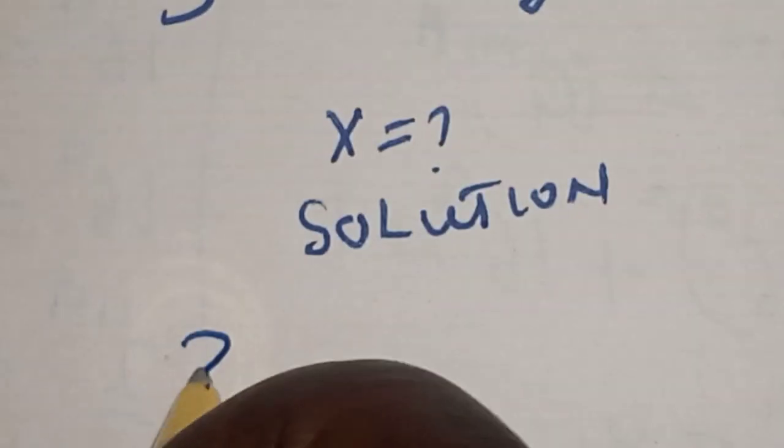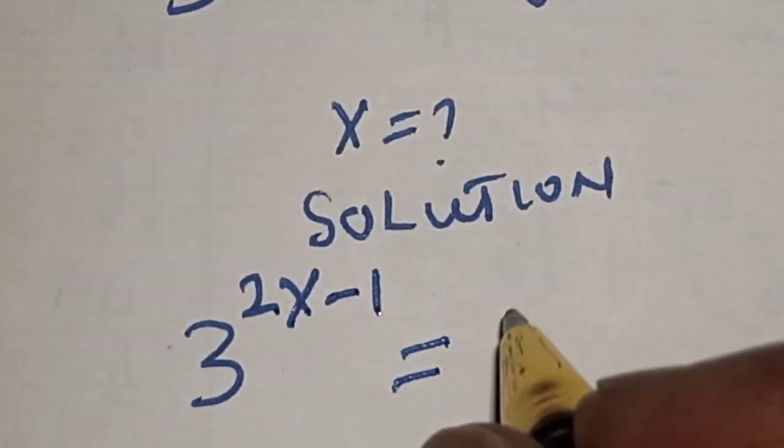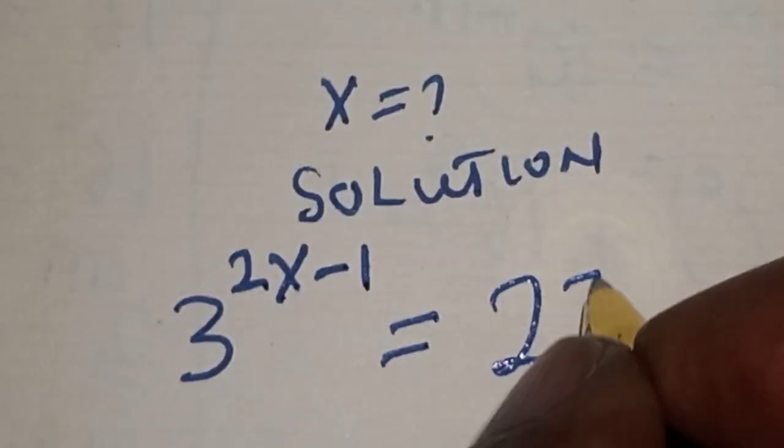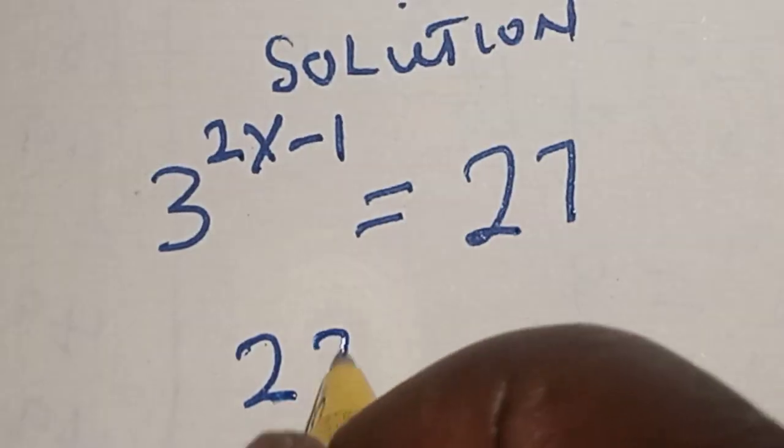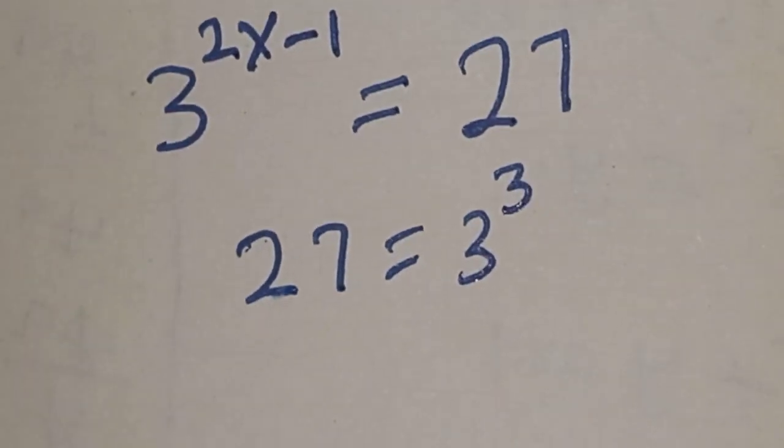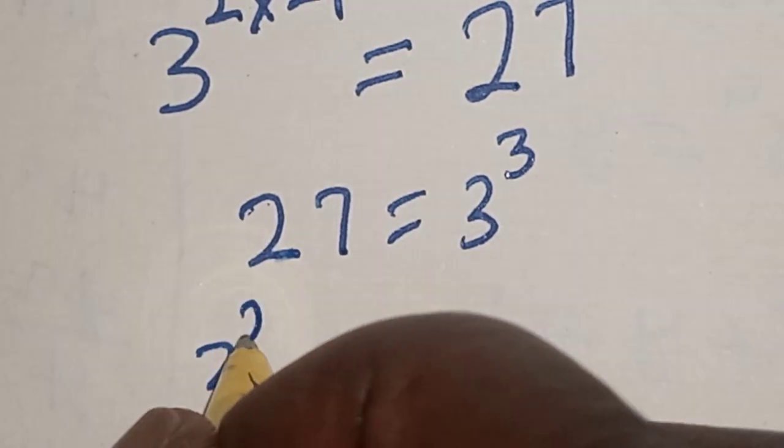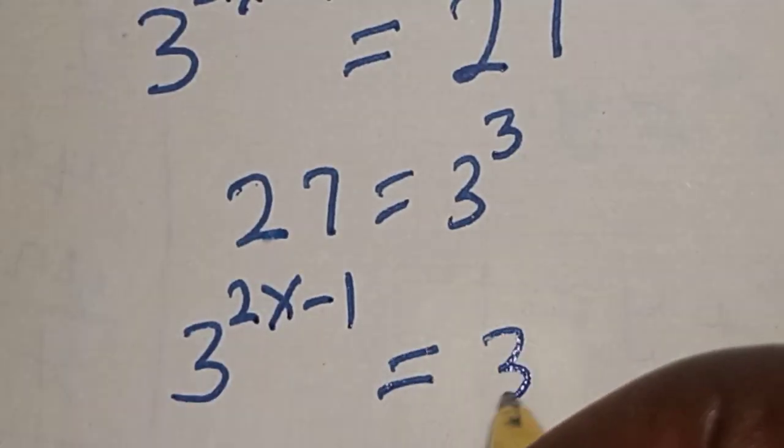3 raised to power 2s minus 1 equals 27, and 27 is equal to 3 raised to power 3. This becomes 3 raised to power 2s minus 1 equals 3 raised to power 3.